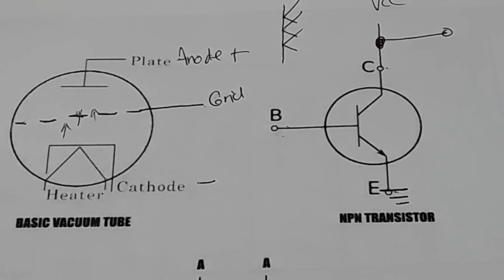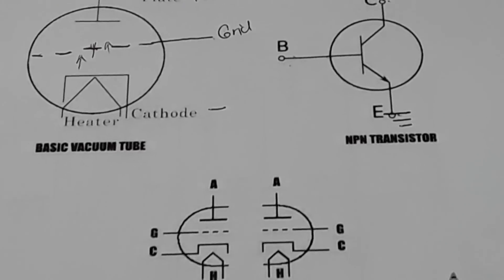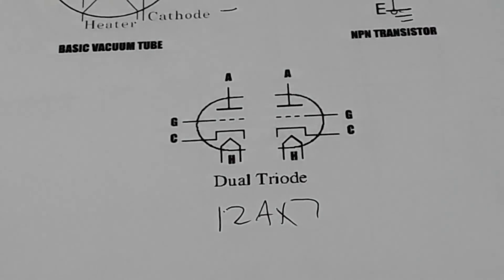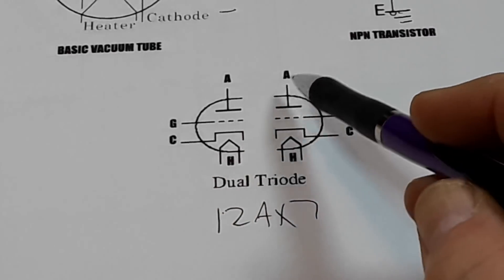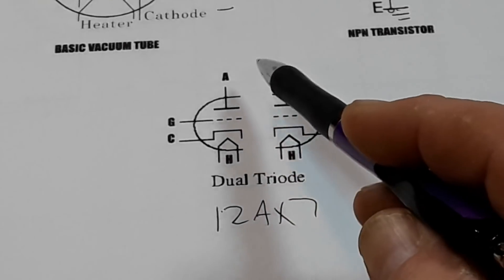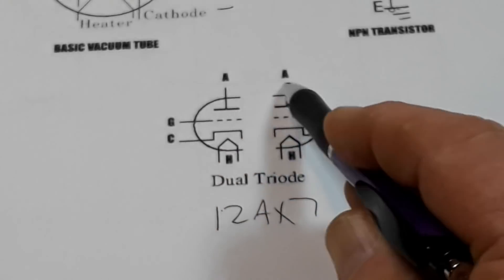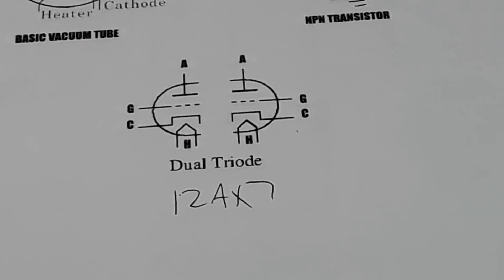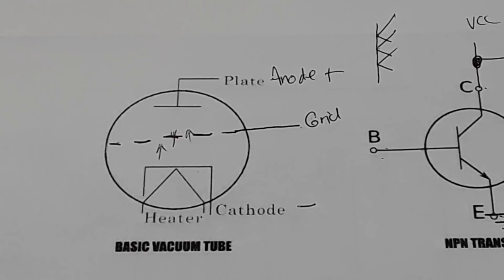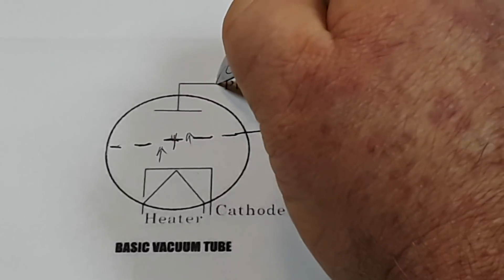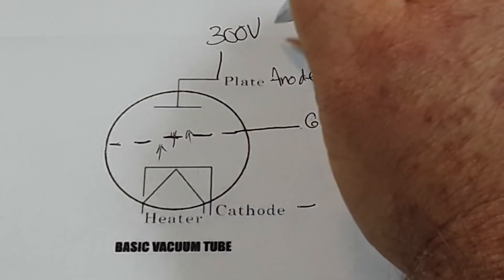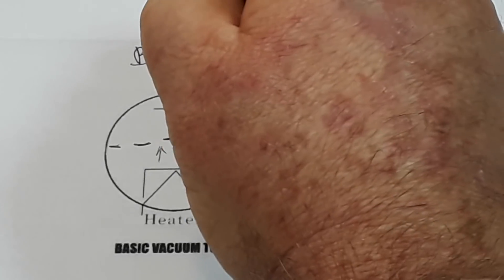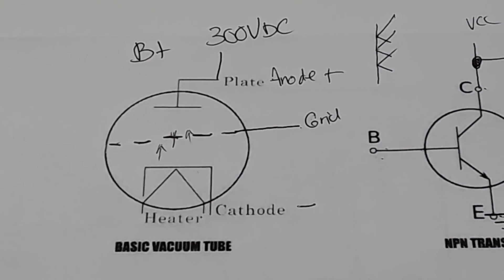The tube we're going to use, the 12AX7, is a dual triode, meaning you basically have two separate triodes in one tube — two anodes, two cathodes, two heaters, and two grids. Here's the thing: we need a lot of voltage. We need the plate voltage to be somewhere in the 300 volt DC range, and when we're dealing with tube amplifiers, that voltage is called B+.